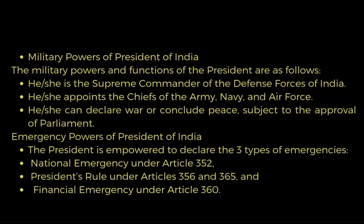Number seven: Emergency powers of the President. The President is empowered to declare three types of emergencies. First, national emergency under Article 352 — when he or she feels the country is under threat internally or externally. Second, President's Rule under Articles 356 and 365 in a state, also known as state emergency — if he or she feels the government of a state is not working in accordance with the constitution, he or she can dissolve the state assembly. Third, financial emergency under Article 360 — if the economic situation has deteriorated.